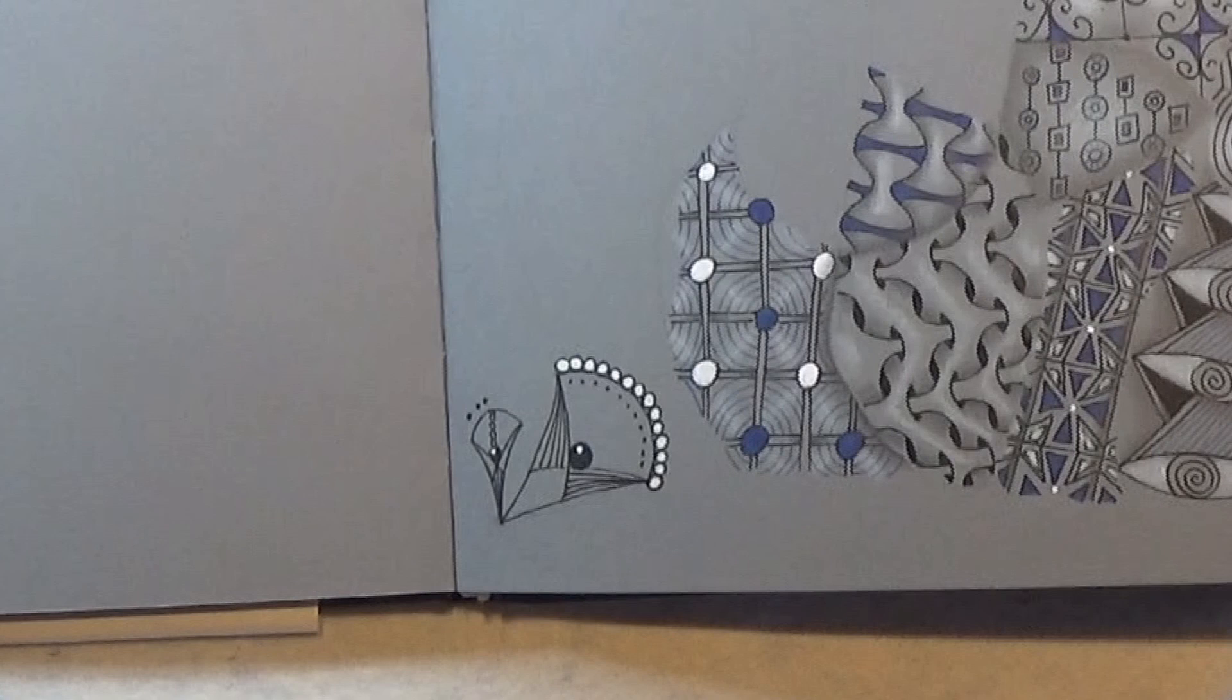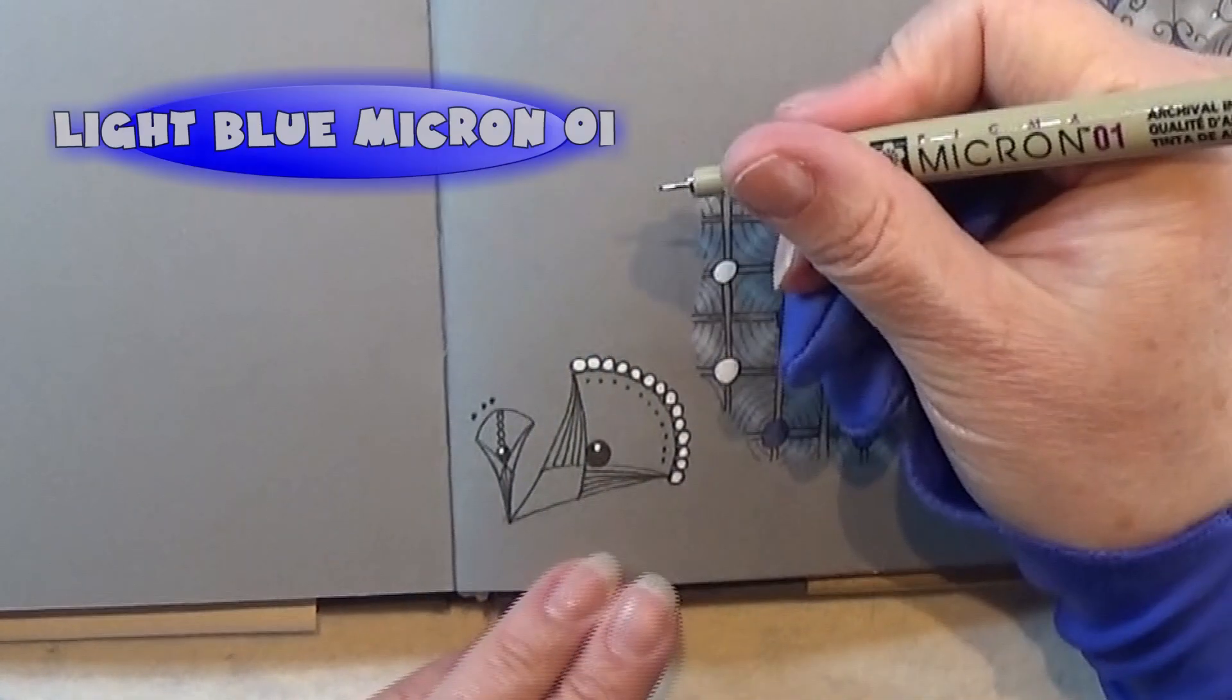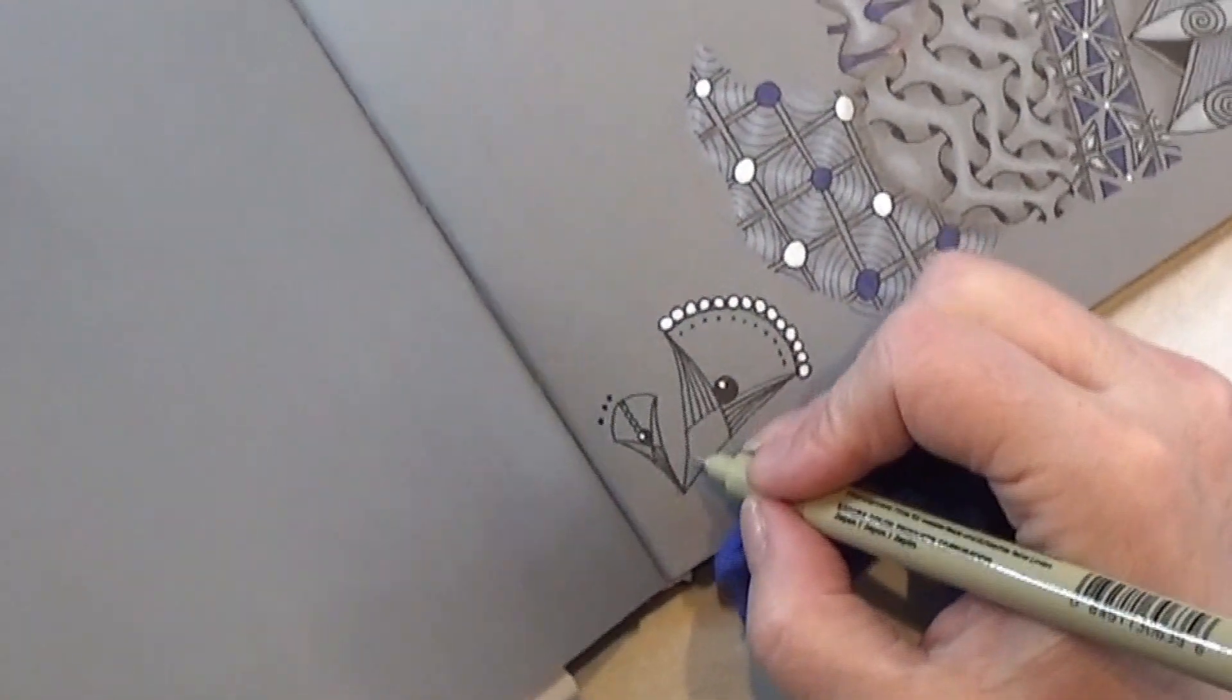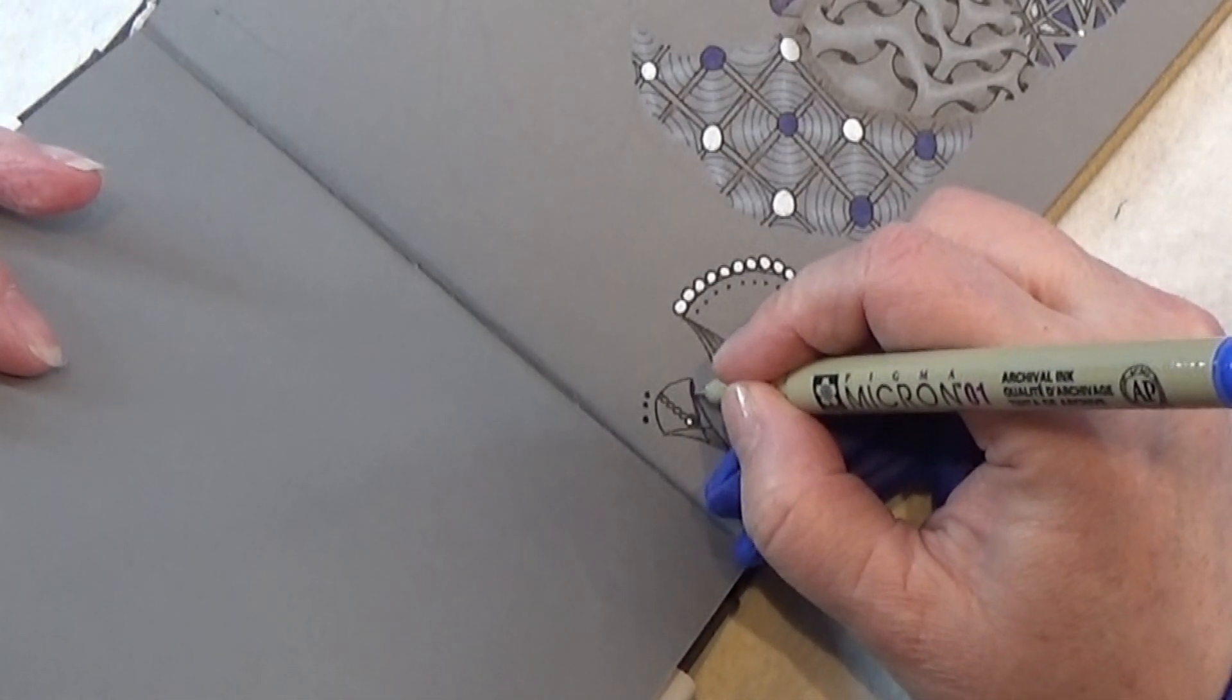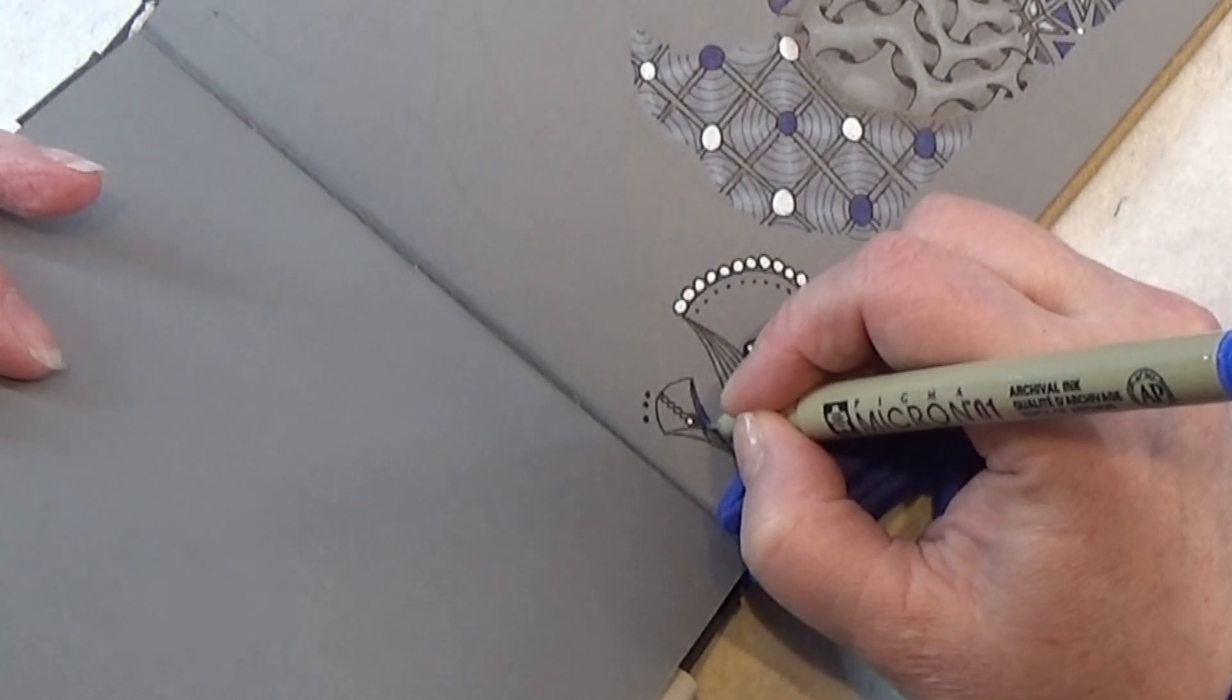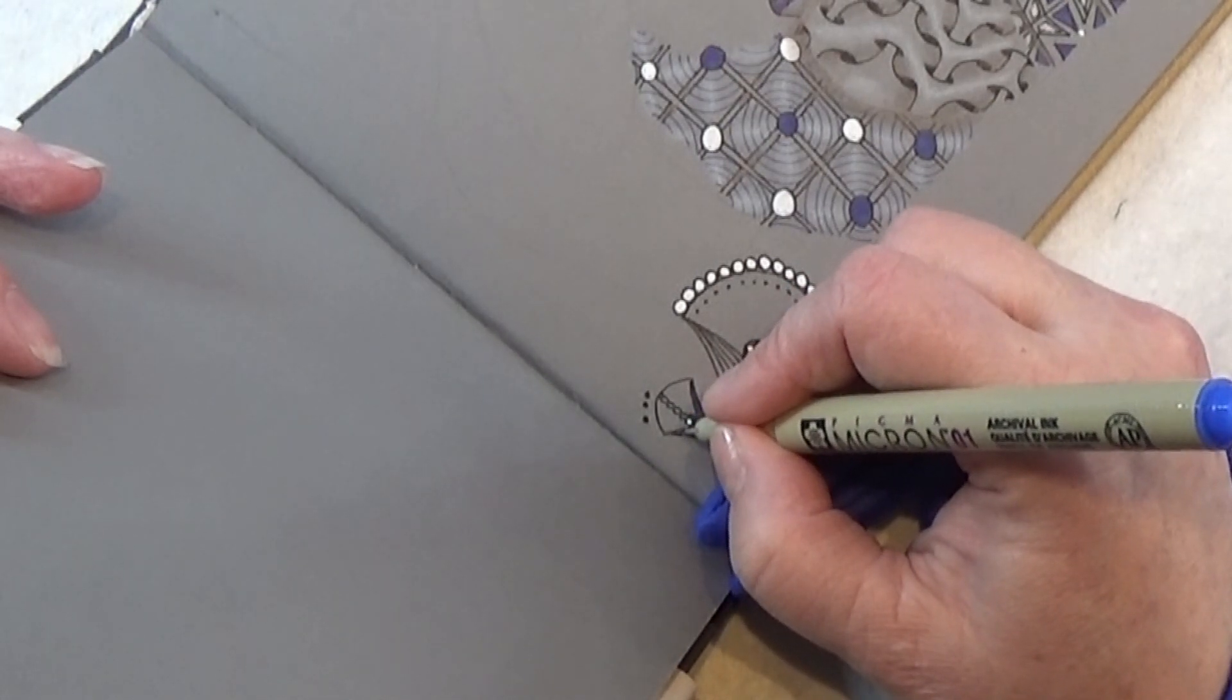There we go, I like that. Let me take my blue micron 01 and I am going to color in the sides of the little one here. I'm just taking my time with this.